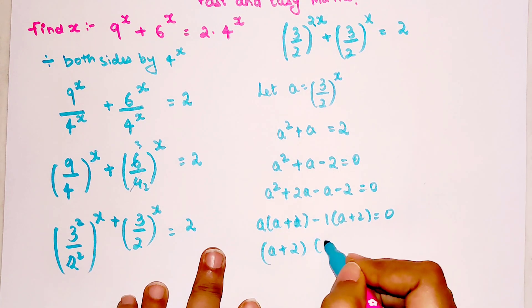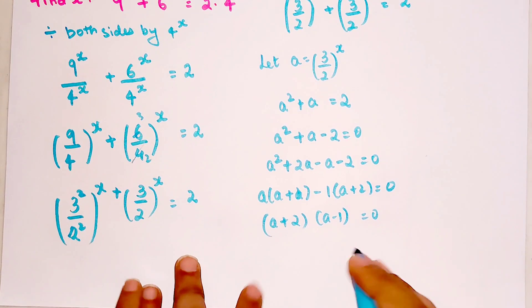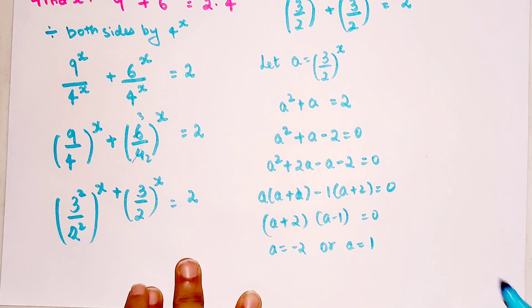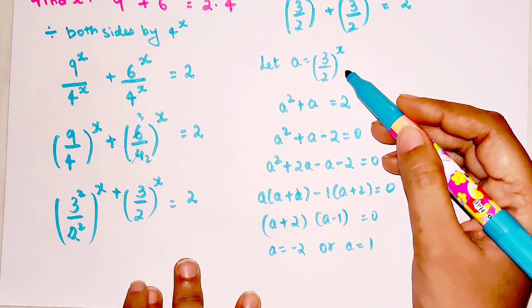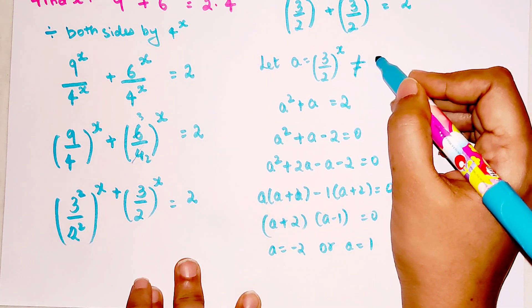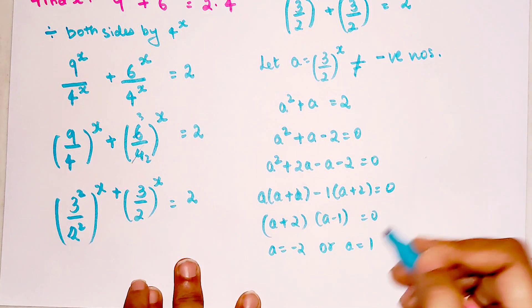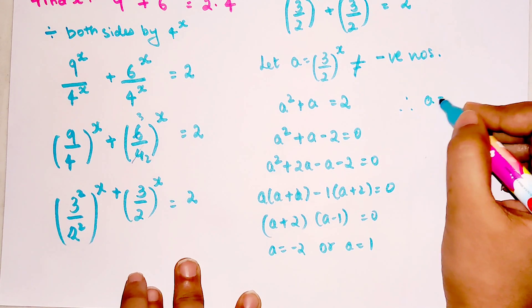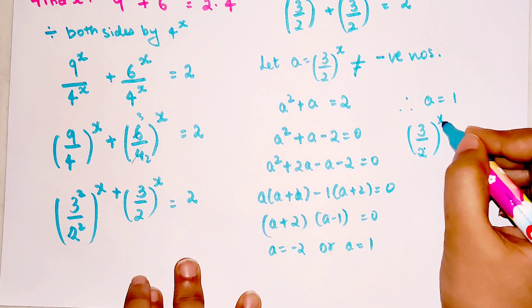So the value will be a = -2 or a = 1. Now please understand here there is a raised to power, so I cannot have this value of a equal to any negative number. So by default I'll say therefore a = 1, so I can say (3/2)^x = 1.